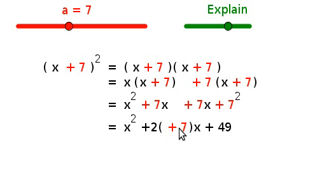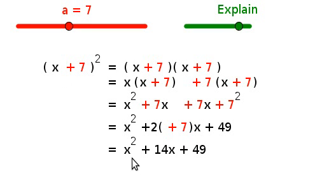So here is the two lots of the 7x, which is the 7 multiplied by the x, and you end up down here with x squared plus 14x plus 49.